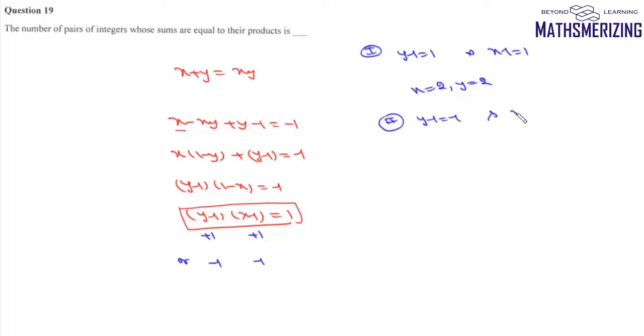Second case: when y minus 1 is minus 1 and x minus 1 is also minus 1, that is when the value of x is 0 and the value of y is also 0. So the number of pairs of such integers is simply 2, which is 0 comma 0 and 2 comma 2.